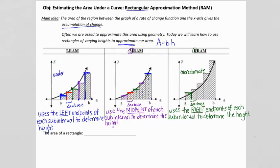LRAM isn't always an underestimate. The only reason that's happening here is because we have an increasing function. I don't want you to memorize that LRAM is always an underestimate — I want you to see that the rectangles are underneath the curve and missing some area, whereas the RRAM rectangles go over the curve. Since the function is increasing, the right side of the interval is bigger, so those rectangle heights go above the curve. The midpoint looks like the best approximation here because it's a little above and a little under, but that depends on different factors — the midpoint isn't always the best.